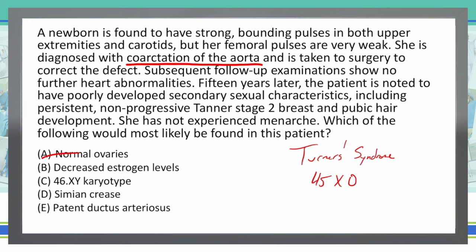Choice C: A 46XY karyotype. We've already determined this is Turner syndrome, not 46XY, which would make it a biological male, so that's not an option. Choice D: Simian crease. A simian crease is classic in Down syndrome. We're talking Turner syndrome, not Down syndrome, so that's not an answer choice either.